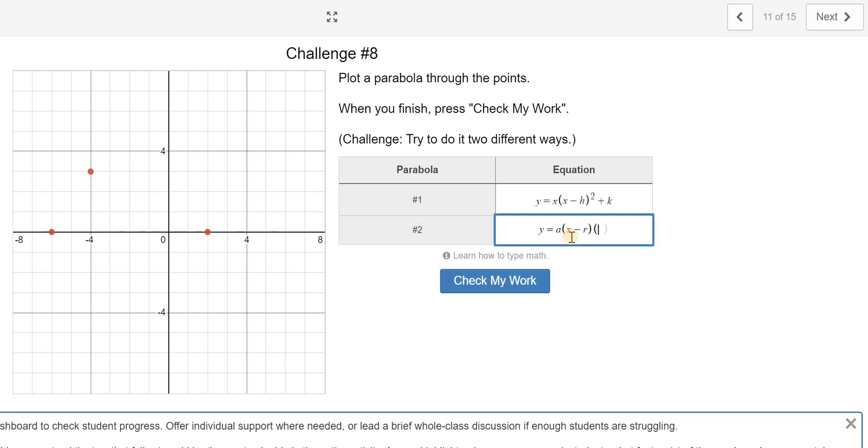And the second one was that second factored form or x-intercept form. And you haven't learned this yet, so don't be worried about it. We're definitely going to go through r and s. So these just represent my x-intercepts. So don't panic. It was just kind of a guess and check for the second one. So no big deal.